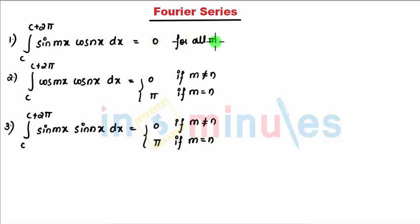These formulas we will be using in trigonometric Fourier series. Now the same formulas we can write for a specific value if I substitute the value of C as -π. So if I keep C equal to minus π, I'll be getting a range of minus π to π. So I define now the same formulas.